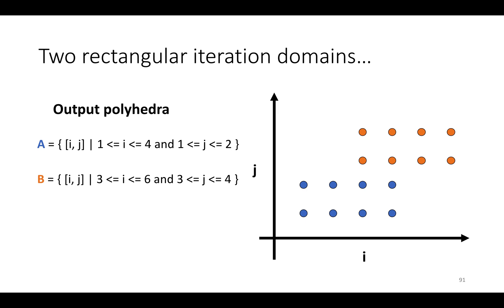Suppose we've got two output polyhedra, depicted on the left in algebra using set notation and on the right graphically. We have polyhedron A, which represents one statement called a — it's the set of all i and j where i is between 1 and 4 and j is between 1 and 2. And then we have set B: all pairs i and j with i between 3 and 6 and j between 3 and 4.